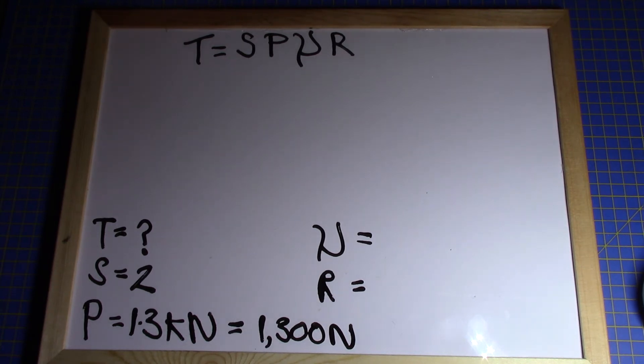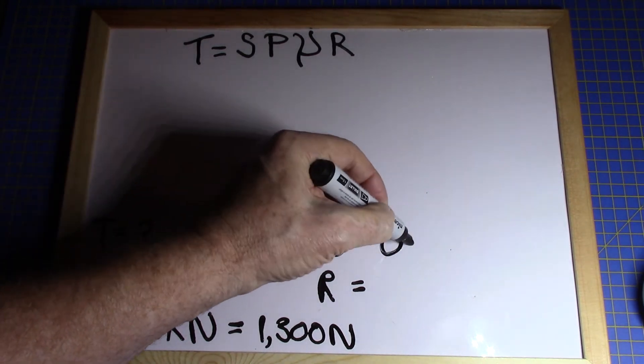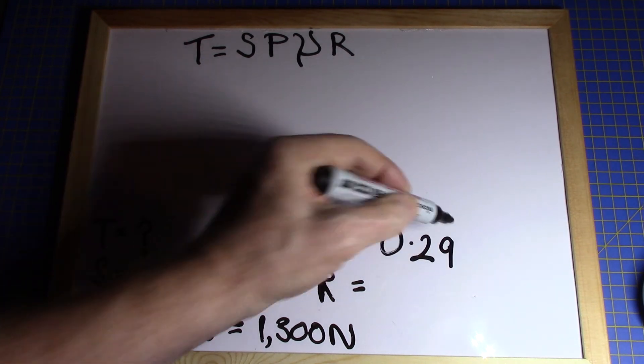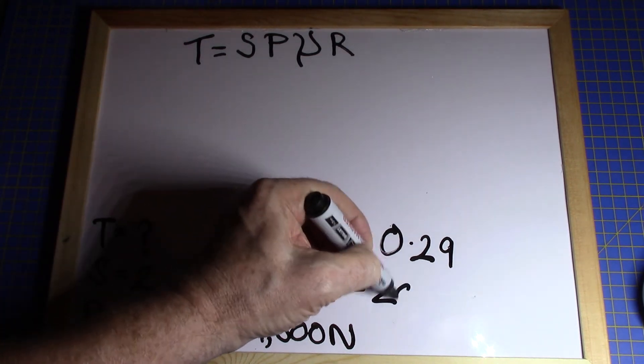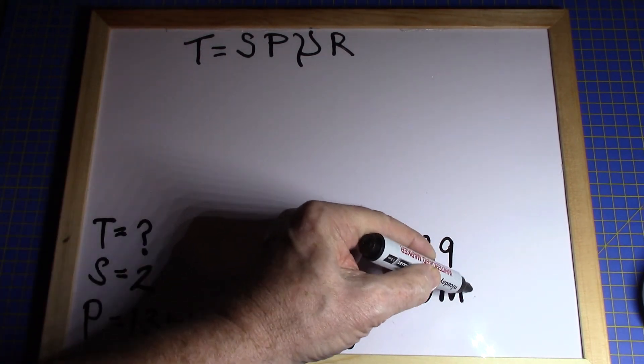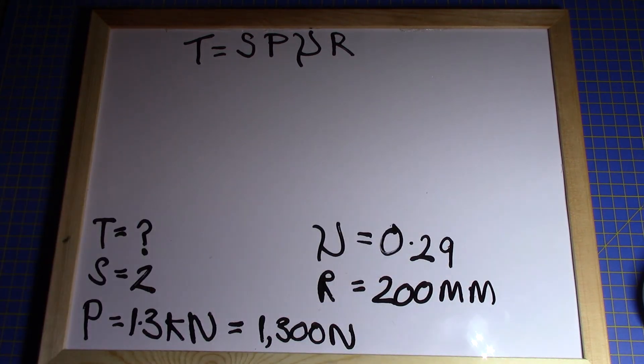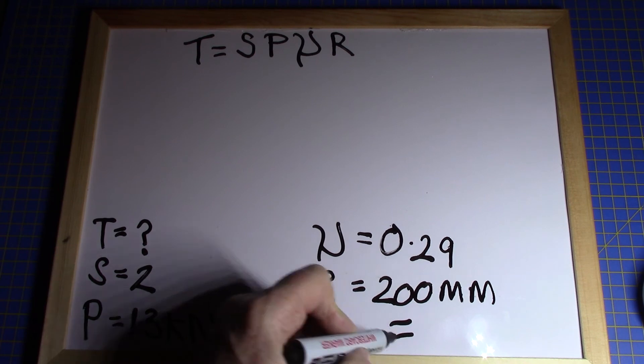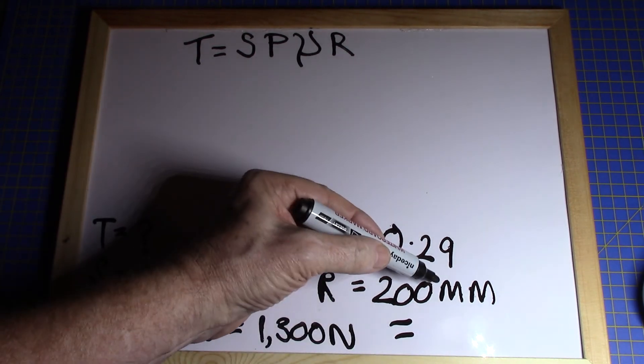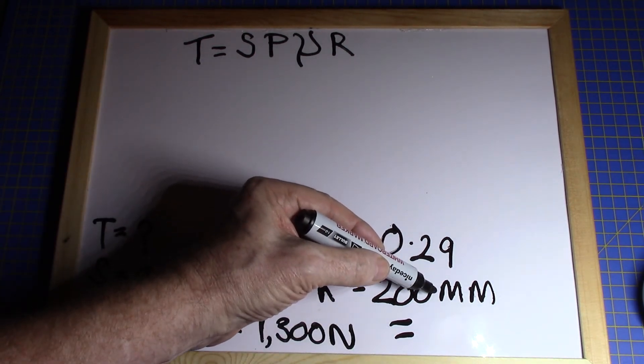A coefficient of friction of 0.29. And a mean effective radius of 200 millimeters. We know we can't use 200 millimeters, so we have to bring that to meters by dividing by a thousand. We move the decimal place three places, one, two, three, so the mean effective radius is 0.2 of a meter.